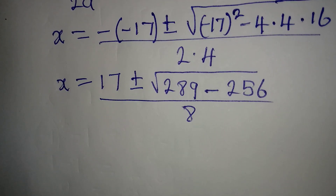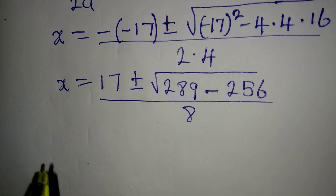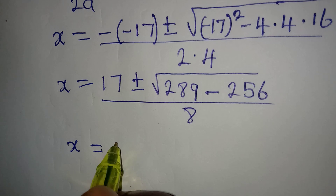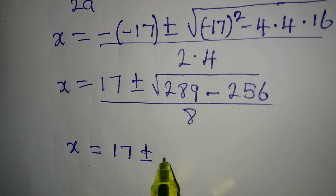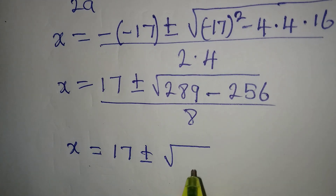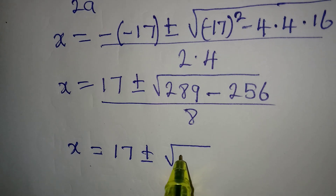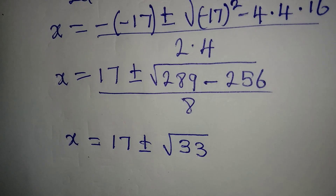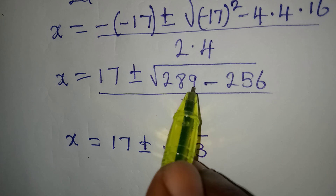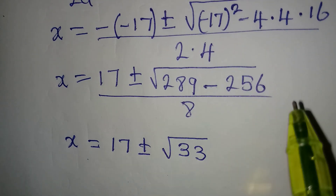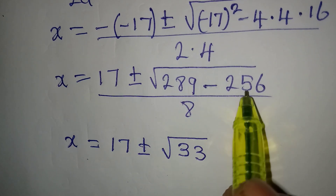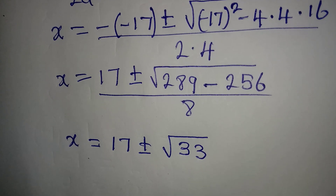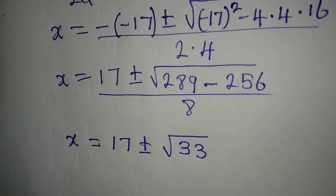Continuing from here, x equals 17 plus or minus... taking the difference of 289 minus 256 gives 33. Now, look at one mistake some learners make: seeing that 289 is a perfect square and 256 is also a perfect square, they find the square root of each and subtract, but that gives a wrong answer. You must take the difference first, then find the square root. So we have the square root of 33, all over 8.